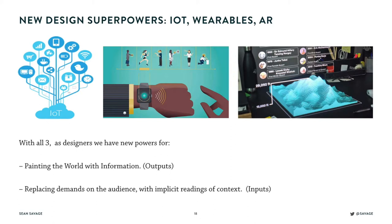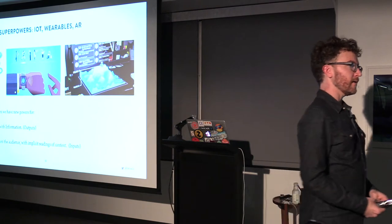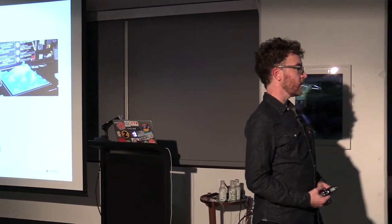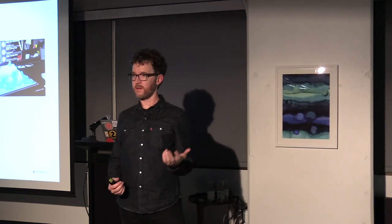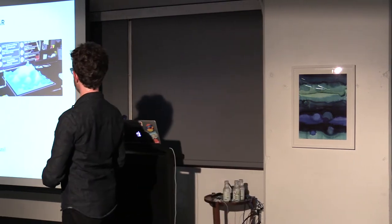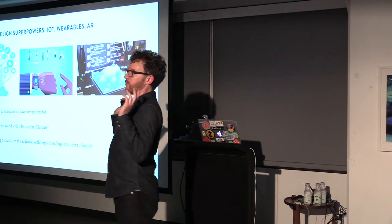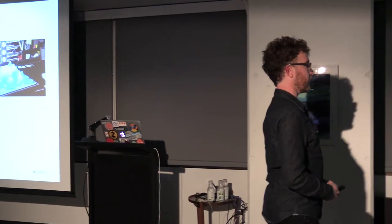What does this mean for us? Thinking beyond smartphones, we have three big categories as designers that these technological trends are giving us: Internet of Things, wearables, and augmented reality. But it gives us two superpowers — outputs and inputs. We can paint the world with information. In a way, these three things are kind of the same. If you're looking at something through augmented reality glasses, or there's something embedded in the room showing the same thing, from a designer's perspective you can think of it the same way. It gives you new ways to paint the world with information and to draw information in.